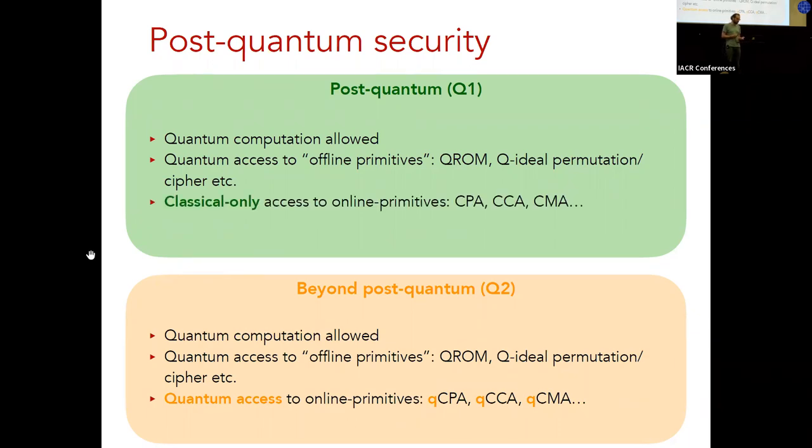However, in the Q1 model, we restrict to classical access of these online primitives. And the reason why this makes sense is basically that our main concern is that our devices that we use today, I mean, this one, it uses crypto, and I'm pretty sure it doesn't do quantum computation. So because these online primitives or these online queries model computations performed by the honest parties with the crypto system, it's reasonable to restrict to classical queries only.